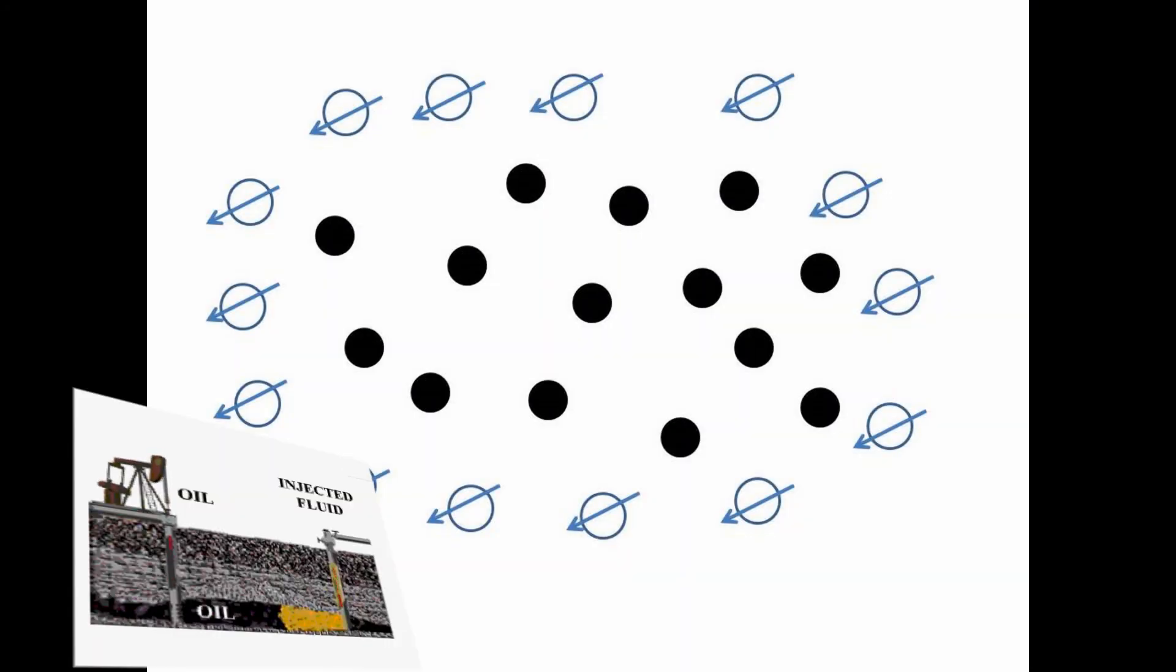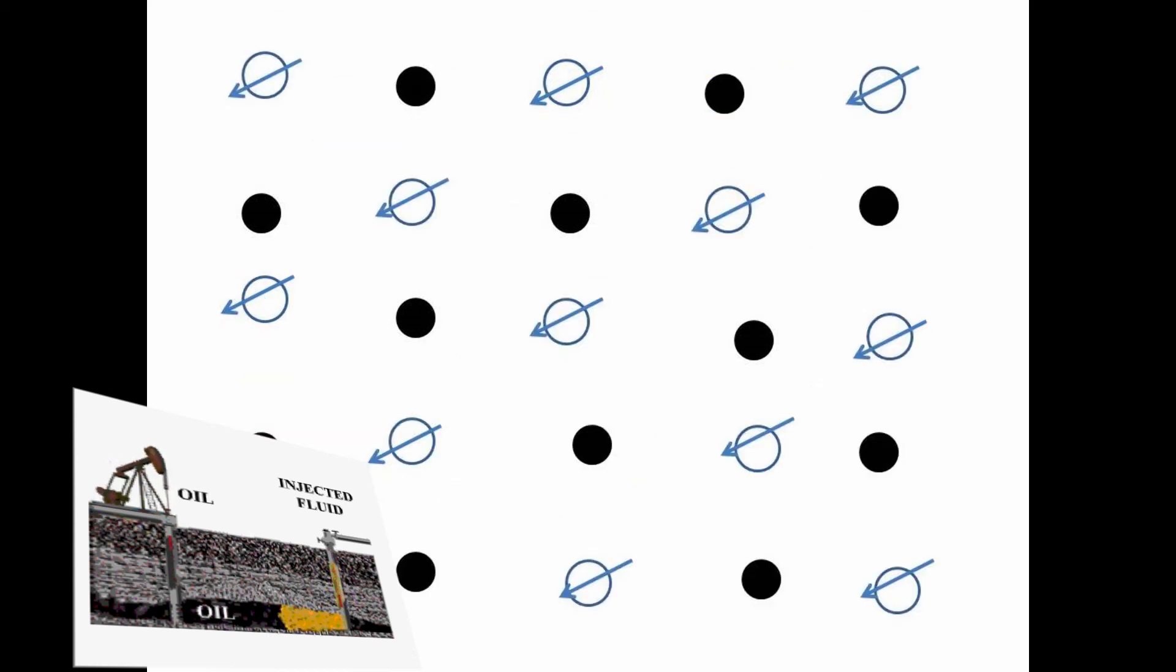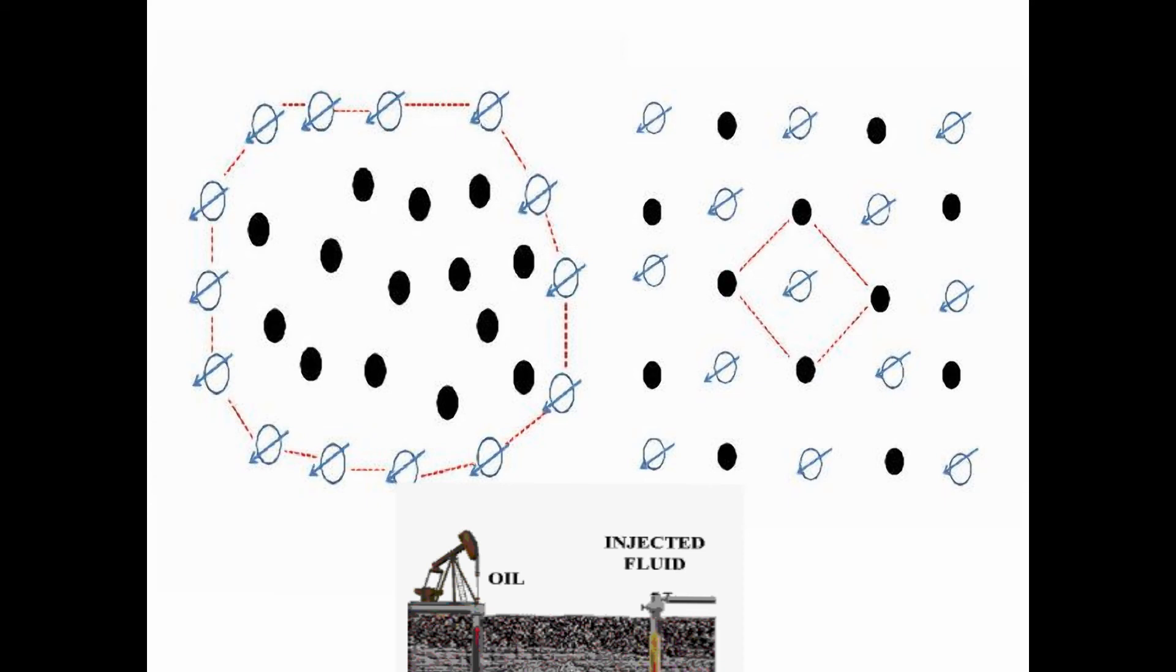When water flooding was first used, the injector wells were placed around the periphery of a field. Over the years, however, engineers learned that it is more economical to drill injector wells in the middle of four wells instead of just drilling around the peripheral of a field. Illustrating both methods on this illustration allows us to see the differences.